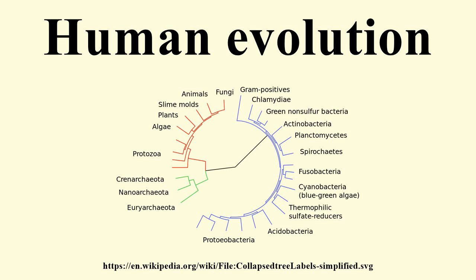Furthermore, analysis of the two species' genes in 2006 provides evidence that after human ancestors had started to diverge from chimpanzees, interspecies mating between proto-human and proto-chimps nonetheless occurred regularly enough to change certain genes in the new gene pool. A new comparison of the human and chimp genomes suggests that after the two lineages separated, they may have begun interbreeding. A principal finding is that the X chromosomes of humans and chimps appear to have diverged about 1.2 million years more recently than the other chromosomes. The research suggests there were in fact two splits between the human and chimp lineages, with the first being followed by interbreeding between the two populations and then a second split. The suggestion of a hybridization has startled paleoanthropologists, who nonetheless are treating the new genetic data seriously.